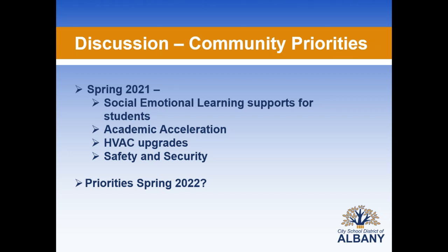The next agenda item covers community priorities. In spring 2021, the district surveyed the community and heard clearly from the budget committee. Those priorities included social emotional learning supports for students, academic acceleration, upgrades to the HVAC system, and safety and security. These continue to be priorities going into 22-23, and the committee was asked to weigh in on whether there are areas of emphasis beyond those four categories or areas within them to revisit.